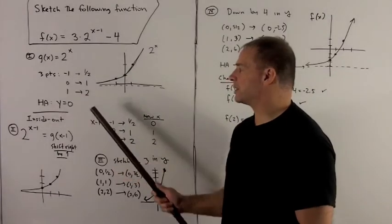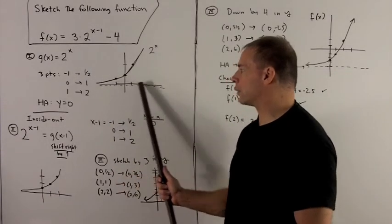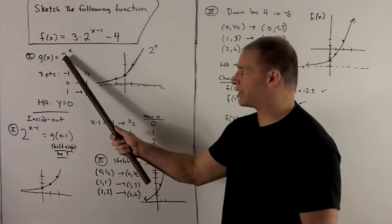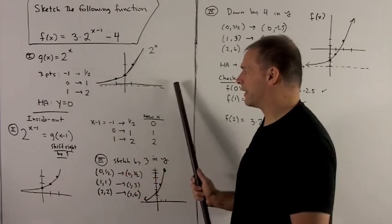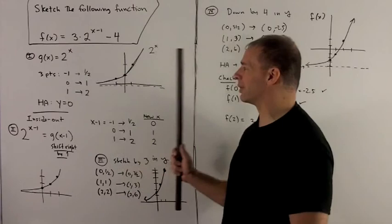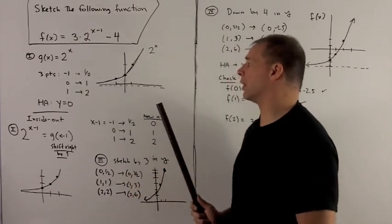Then I need the horizontal asymptote, which is always going to be at y equals 0. We have a positive number, and I raise it to the x power. We always have that positive asymptote. It might go to the left, it might go to the right, but it's always going to be at 0.